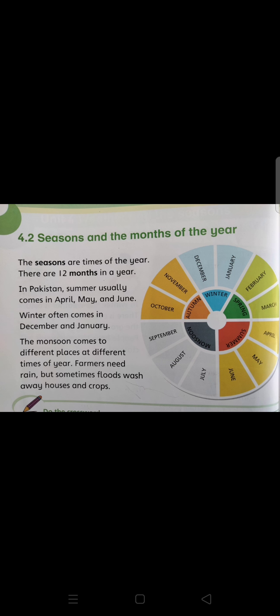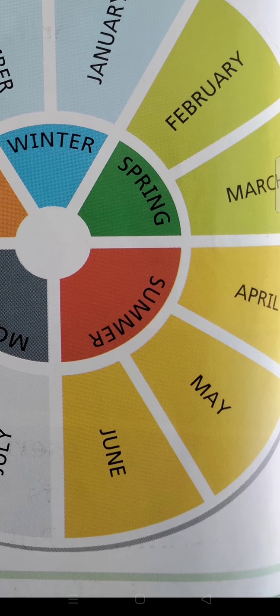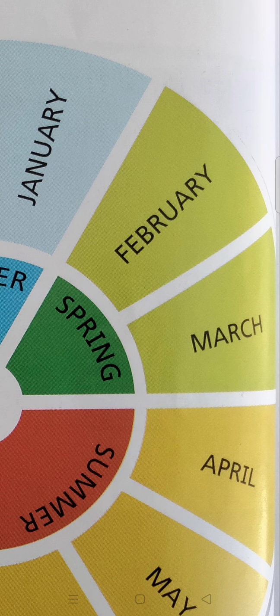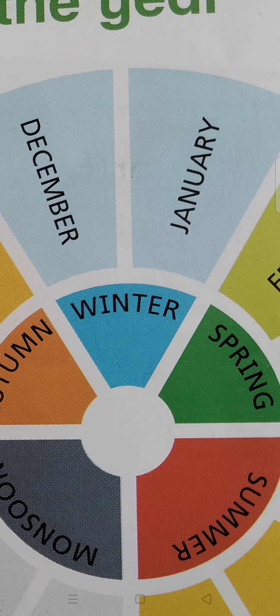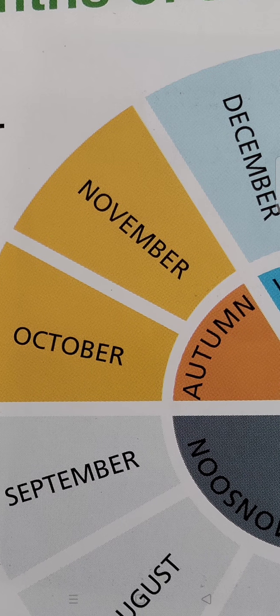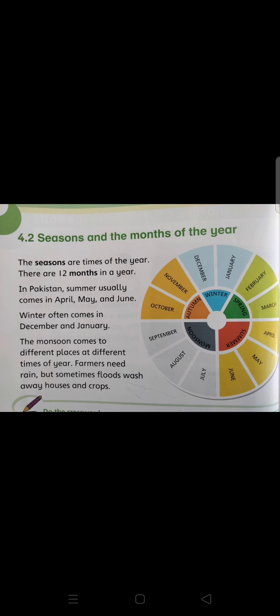Spring comes in February and March. Winter comes in December and January. Autumn comes in October and November. The monsoon comes to different places at different times of the year.